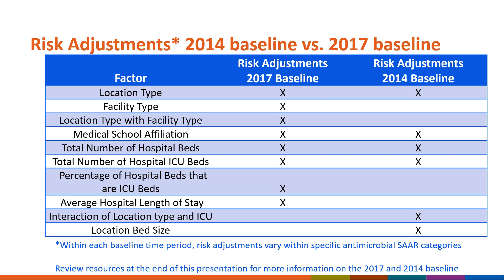Shown here is an overview of which variables were included in the 2014 and 2017 models. An X indicates that one or more SAR models in that baseline time period include that factor as a risk adjustment. In the 2017 baseline models, new factors were included as risk adjustment variables, including the percentage of ICU beds and average length of stay.